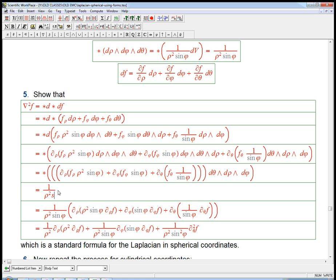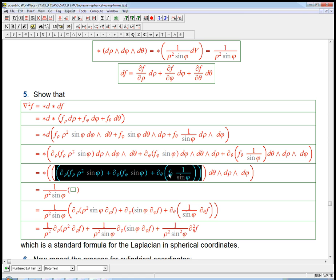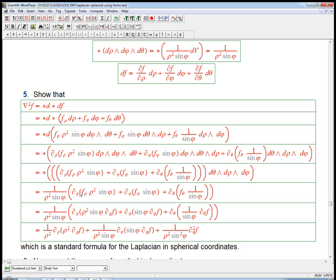And that just puts this factor in front. Rho squared sine phi. And then it just kills, it just turns that three form into a one form. And then what's left is just this. And that's exactly what we wanted to get.